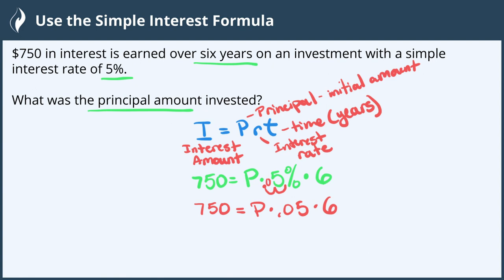On the right-hand side, we can multiply 0.05 times 6 to simplify. P times 0.3 is what we get when we multiply those, and everything else remains the same.